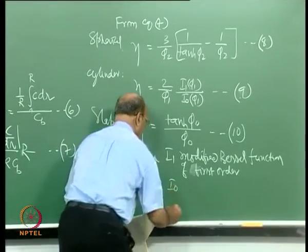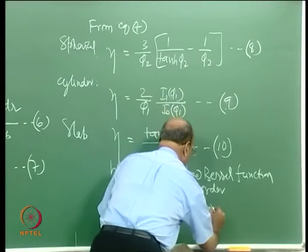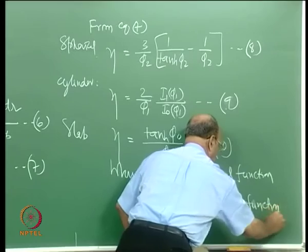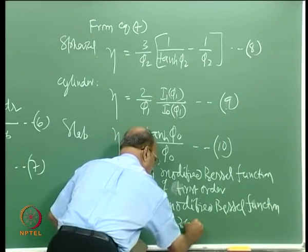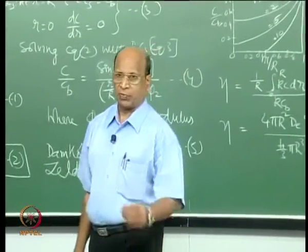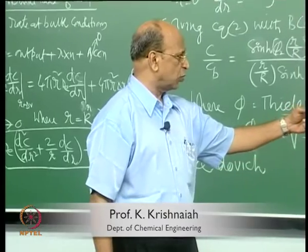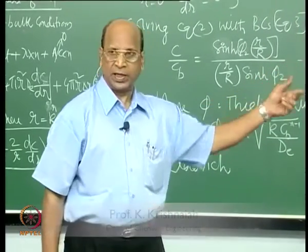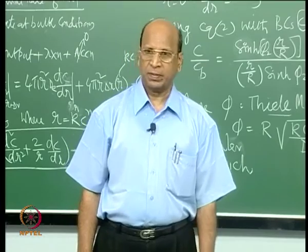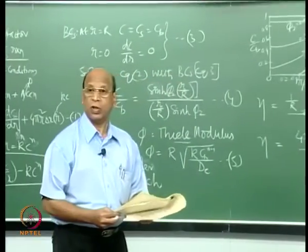For a flat plate (slab), the effectiveness factor is: η = tanh(φ₀)/φ₀. This is equation 10. These three equations cover the three important geometries: sphere, cylinder, and slab. For the cylindrical case, you need to look up I₁ and I₀ values from mathematical tables given a calculated φ₁.